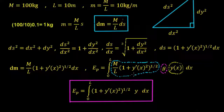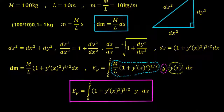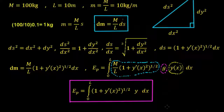We can simplify this because the total mass, total length, and g are all fixed constants — we can take them out. We're finally left with the potential energy of the hanging rope as the integral from zero to L of (1 + y′²)^(1/2) times y(x) dx. This is the final equation we're looking for, and we'll use it over the next few videos to introduce the ideas of calculus of variations.